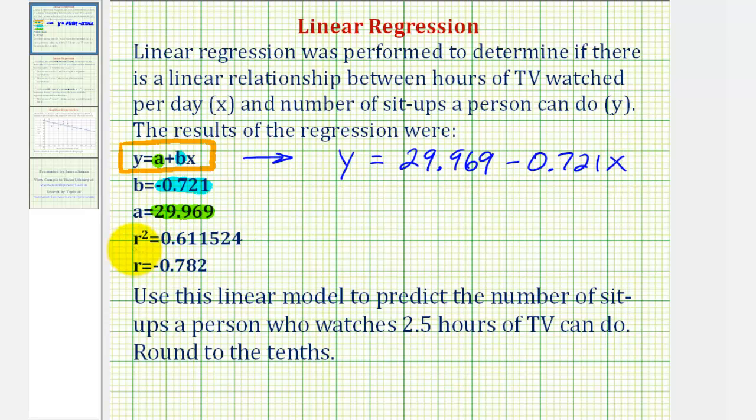Now we'll talk about r squared and r in just a moment. But our main question here is, use this linear model to predict the number of sit-ups a person who watches 2.5 hours of TV can do. And we're asked to round to the nearest tenths, which means round to one decimal place.